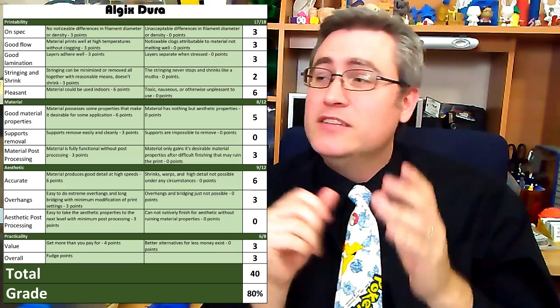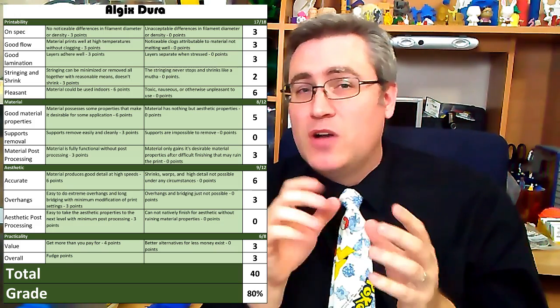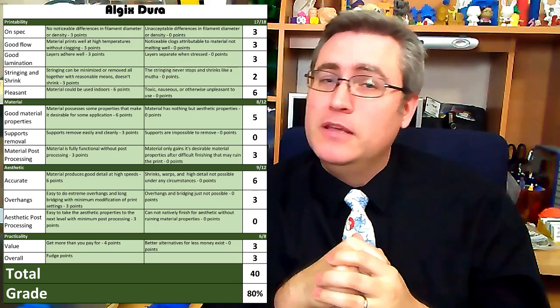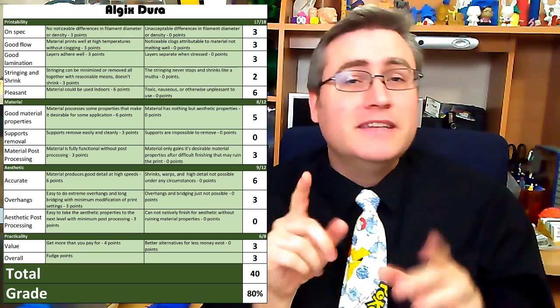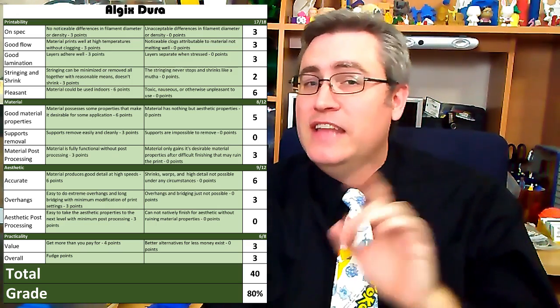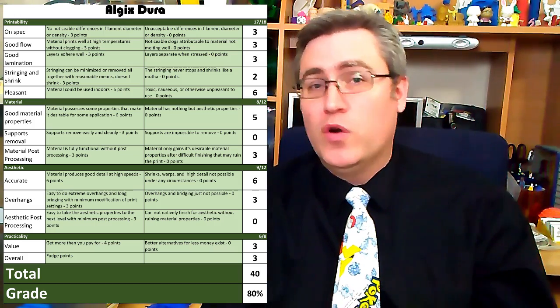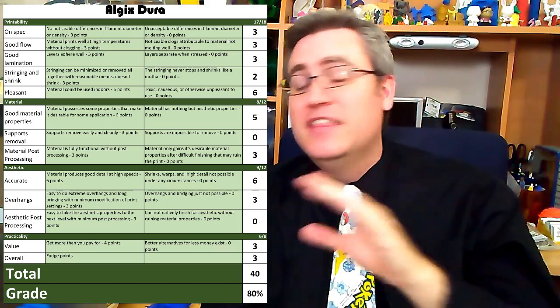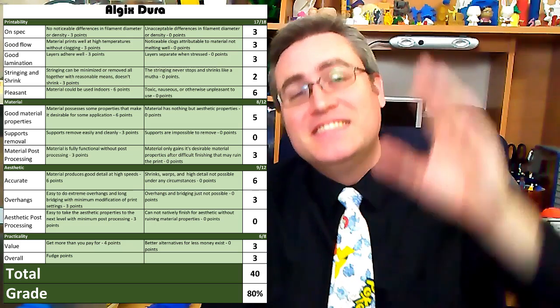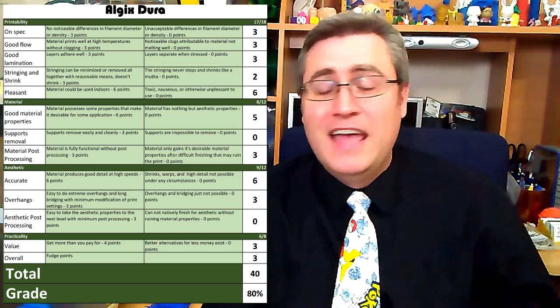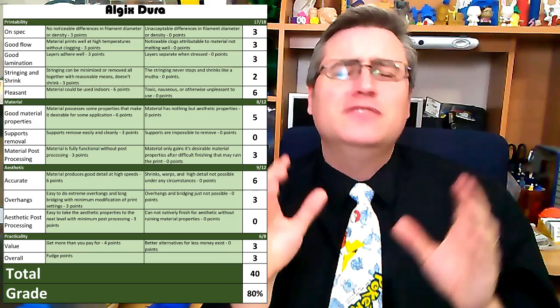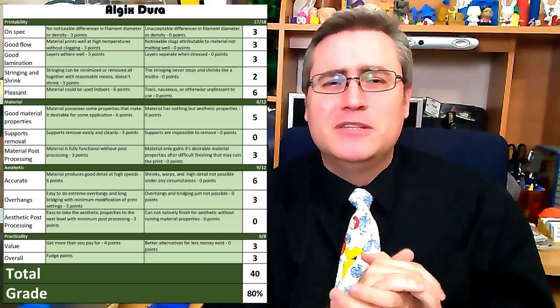Still, its overall grade is comparable to ABS and PLA. Oh, except that now that the rubric's changed, now that we're including curling in there, ABS gets a lower score than it. So ABS, this has actually knocked ABS down a notch in my opinion. Now, if Dura didn't curl so bad, this would be a fantastic material. As it is, it's still a really good material. And I recommend trying it out.